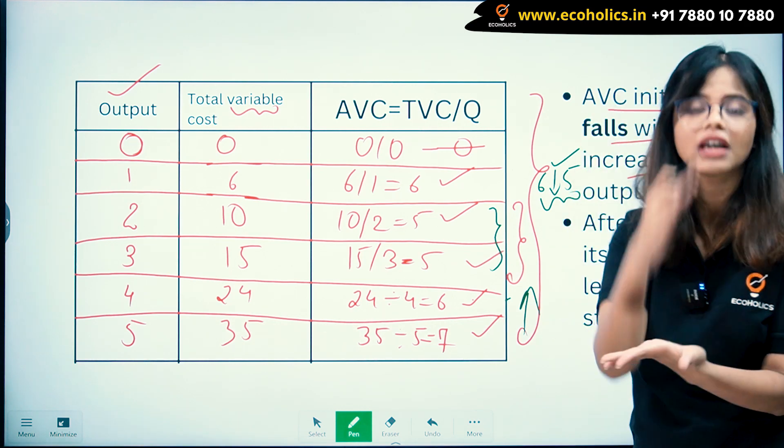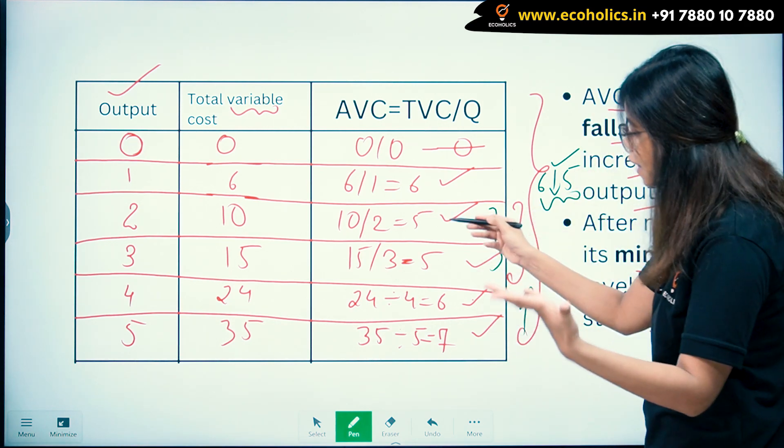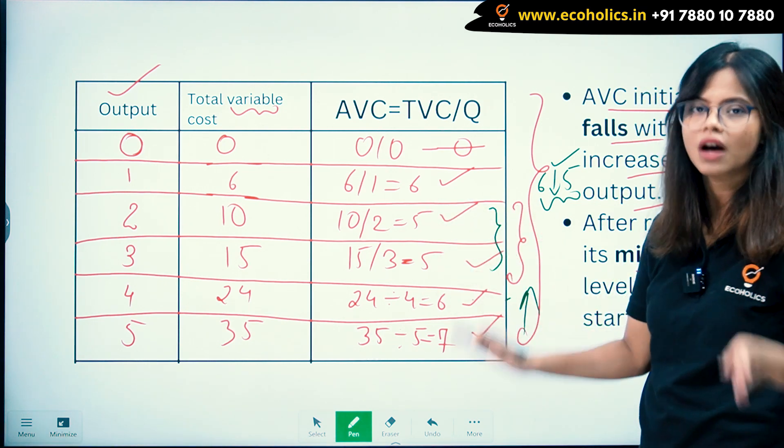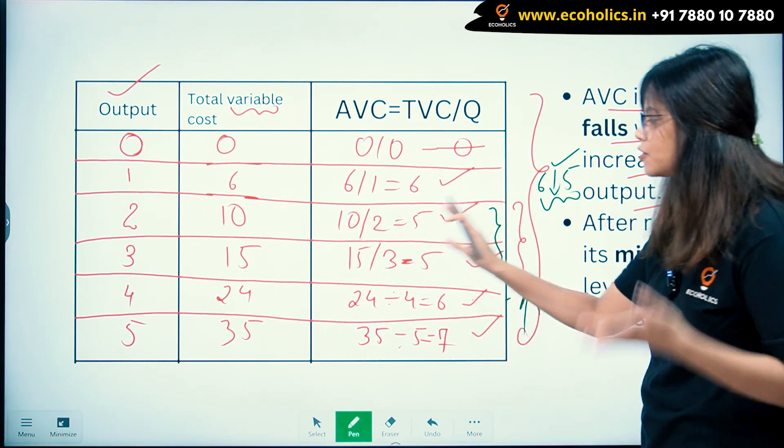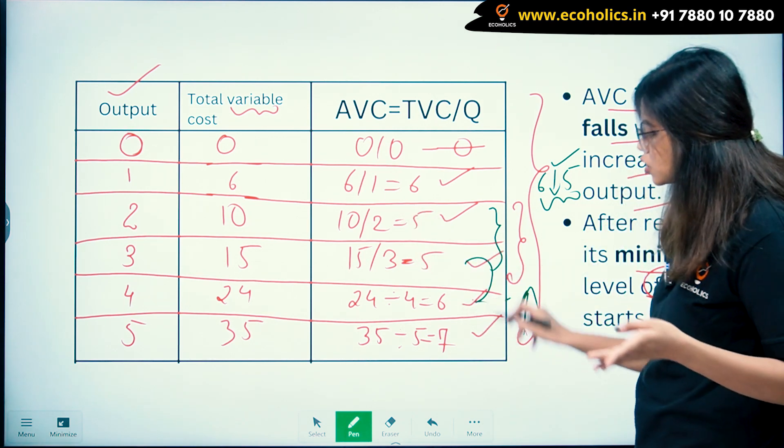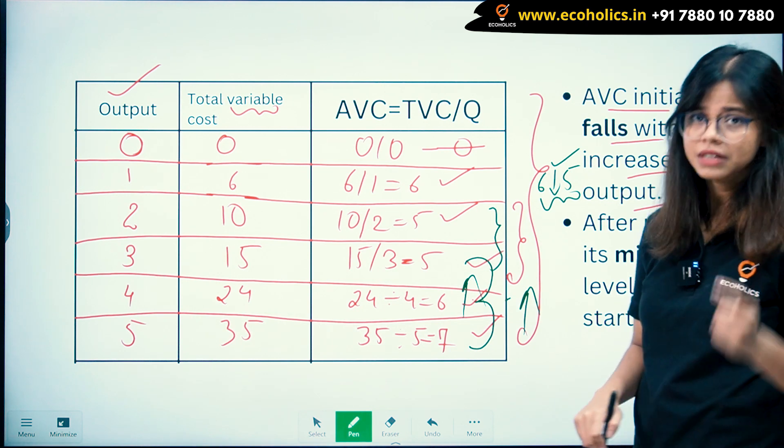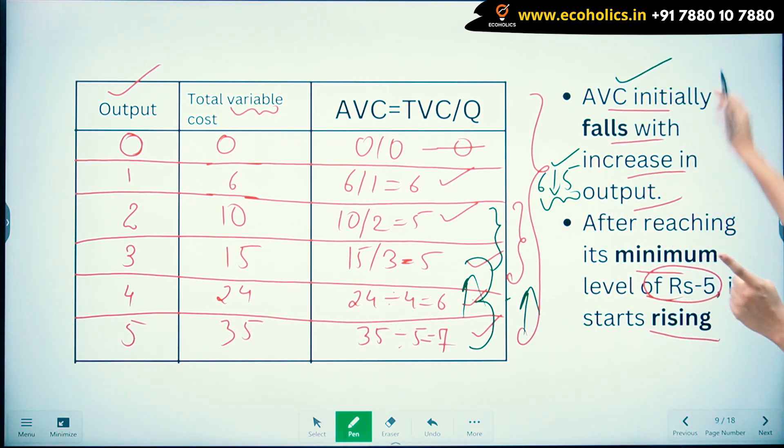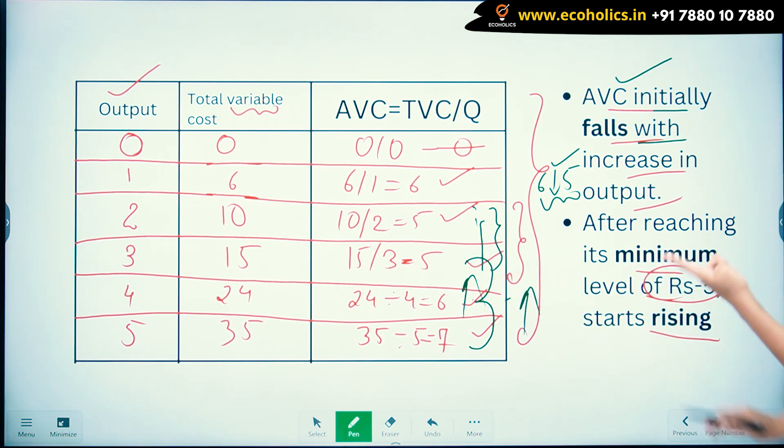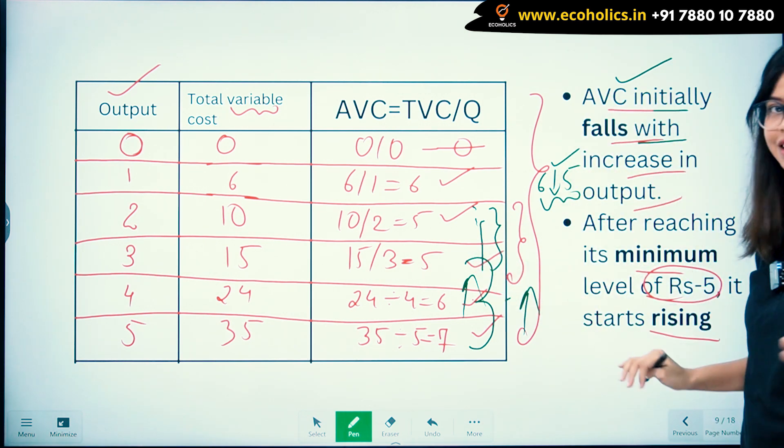First, 6 to 5—your AVC is falling. Then 5 to 5, it reached its minimum range—it is constant. But when it goes from 5 to 6 and then 6 to 7, AVC is increasing. That is the meaning of this schedule: AVC initially falls with increasing output, and after reaching its minimum, it starts to rise.